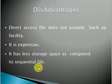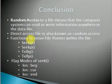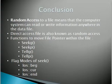To conclude: a random access file is a file where the computer system can read and write information anywhere in the data file. It is also known as a direct access file. Its functions are seekg, seekp, tellg, and tellp. For the seek functions, the flag modes are ios::beg, ios::cur, and ios::end. Thank you for listening to my lecture.